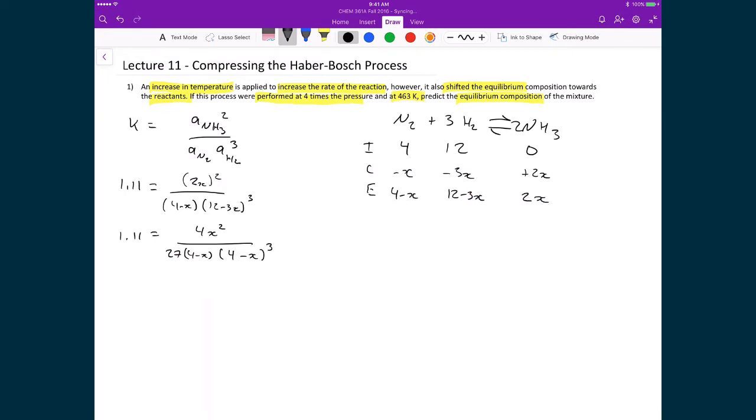I can then move the 27 and the 4 over to the left hand side. And so what I get is 7.4925 is equal to x squared divided by 4 minus x raised to the power of 4.